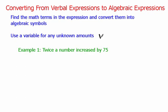The most common variable to use is x, but also n, m — whatever letters we want can be used. So let's take a look at example number one. Please write this example down in your notes. We've got 'twice a number increased by 75.'